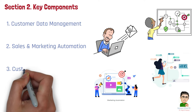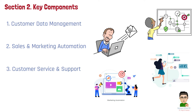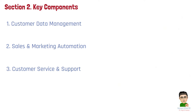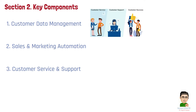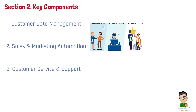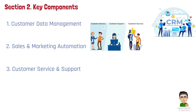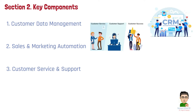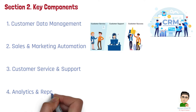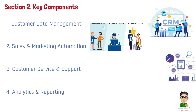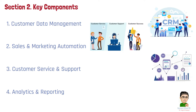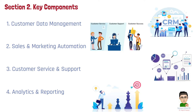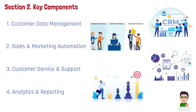Number 3: Customer Service and Support. A key function of CRM is managing customer support. CRM tools enable companies to track customer issues, monitor response times, and resolve complaints more efficiently. With CRM, customer service teams have access to a complete customer history, allowing them to deliver faster, more personalized service. Number 4: Analytics and Reporting. CRM systems offer advanced analytics and reporting features that provide insights into customer behavior, sales trends, and campaign effectiveness. These insights allow managers to make data-driven decisions, identify opportunities for growth, and continually improve customer relationships.